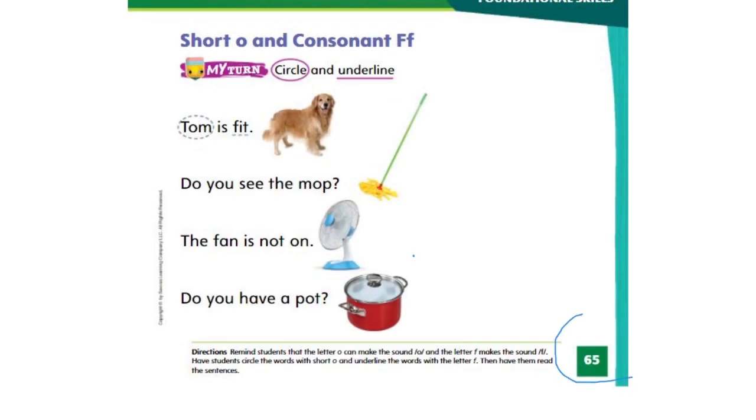And on page number 65 for short O and consonant F, we have to circle the words that have short O sound in the middle and underline the words that begin with F. The first sentence is already done for you. So let's read it. Tom is fit. Tom is fit.